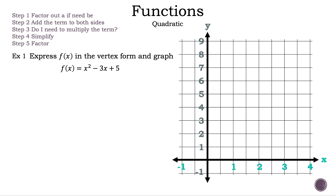Step 5, factor. Now let's read the question. Let's express f of x, where f of x is equal to x squared minus 3x plus 5, in the vertex form and graph. Now let's convert this quadratic function into vertex form using complete the square. In this case, a is 1, so we don't need to factor anything out.